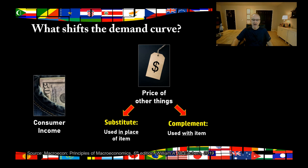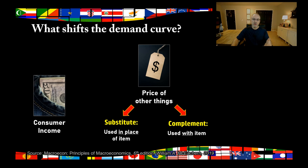There's another thing called a complement. A complementary product is a product that is used with the product you're talking about. For example, hot dog buns. If hot dog bun prices dropped, that may cause people to buy more hot dogs because the buns are cheaper. And the reverse is also true — if hot dog prices go down, then you would expect bun demand to go up. So when things change that are related to an item — either a substitute or a complement — the demand curve can shift one way or the other.